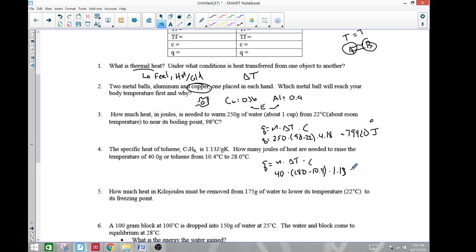And at that point, 28 minus 10.4 equals 17.6 change in temperature times 40 times 1.13 is 795. So we have 795 joules of energy.